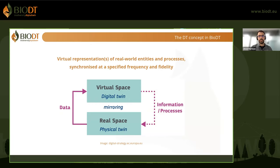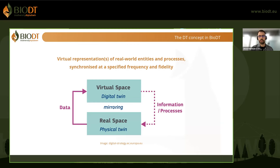The first question that comes up is: what is a digital twin? We can think of this as a virtual representation of entities and processes that exist in the physical world. The virtual representations are then synchronized at some specified frequency and fidelity, depending on the purpose and context of the digital twin. So we have an object in real space, which is the physical twin, and then we have a virtual object, which is the digital twin, with data being passed from the real world object to the virtual object. In the context of BioDT, this is especially relevant to ecological research and furthering our understanding of biodiversity dynamics.